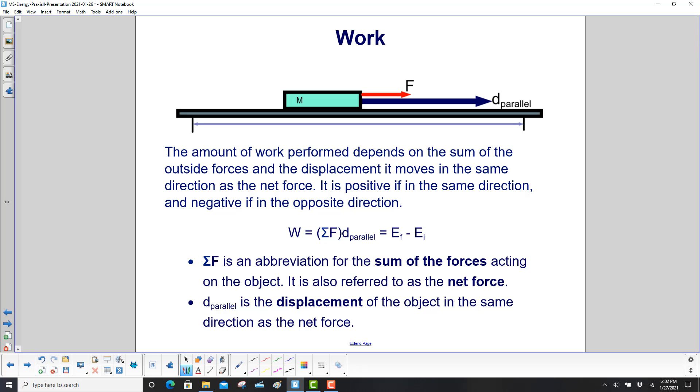We're now ready to come up with an equation for work. The amount of work performed depends on the sum of the outside forces and the displacement it moves in the same direction as the net force, and net just means total forces. It is positive if in the same direction and negative in the opposite direction. So work is equal to the sum of the forces, that's what this sigma f here is, that's the sum of the forces, times the displacement that's parallel to it, and it's also equal to the final energy minus the initial energy. This sigma f here is an abbreviation for the sum of the forces, also called net force. D parallel is a displacement of the object in the same direction as our net force.